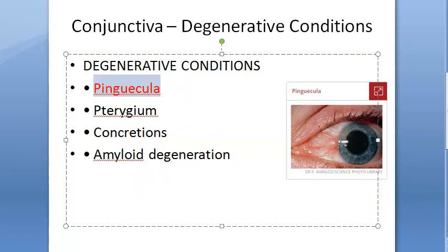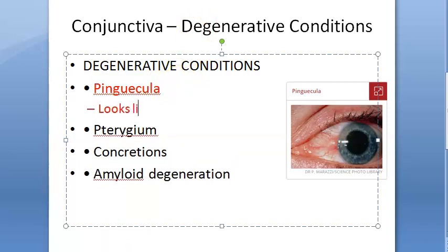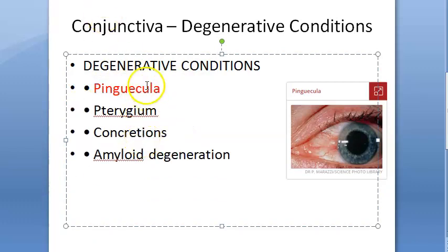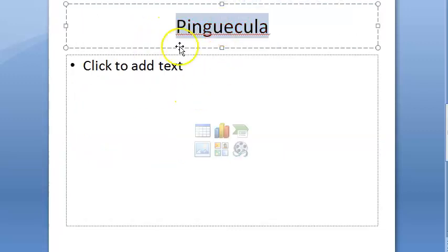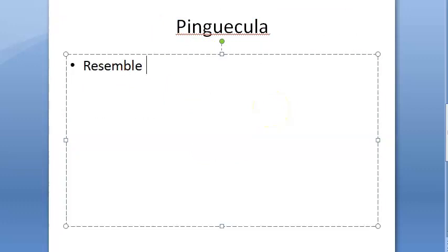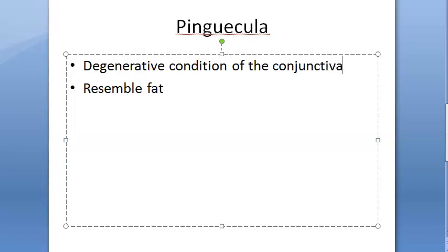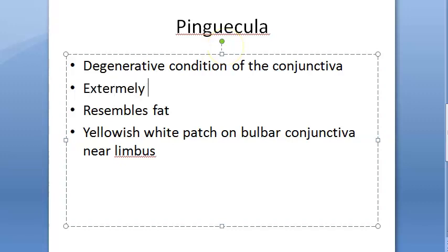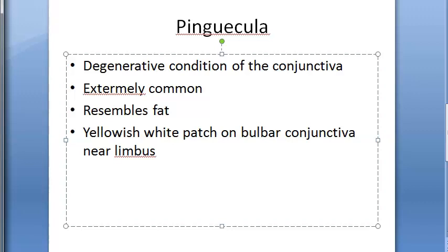Pinguecula is named from 'pinguis' because it resembles fat. It is a degenerative condition of the conjunctiva presenting as a yellowish-white patch on the bulbar conjunctiva near the limbus. This is an extremely common condition.